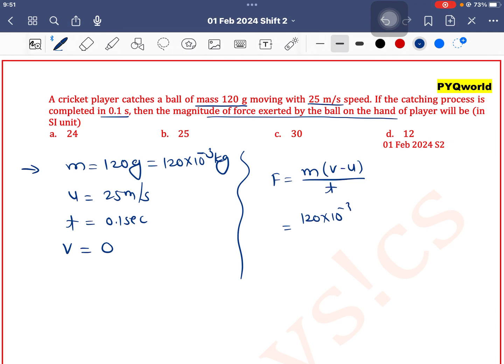So mass is 120 × 10^-3, final velocity is 0, initial is 25, divided by time is 0.1. So 12 into 25 is 300, into 10^-3 by 10^-1.